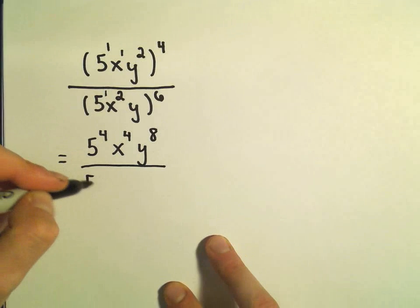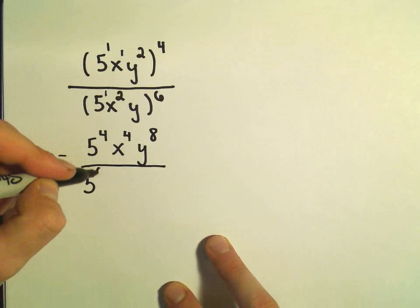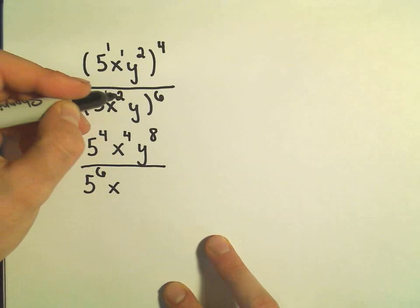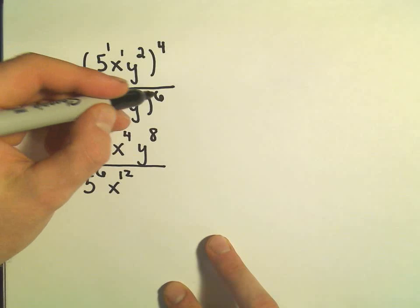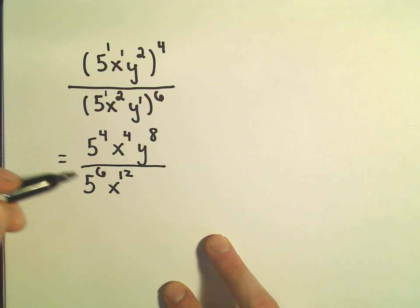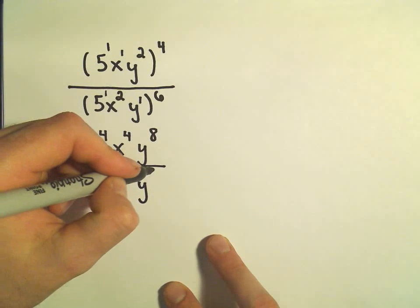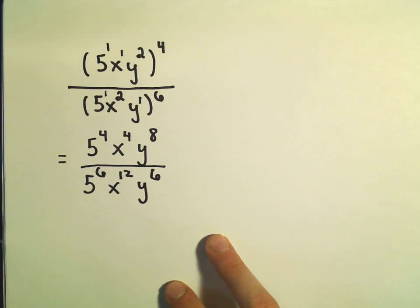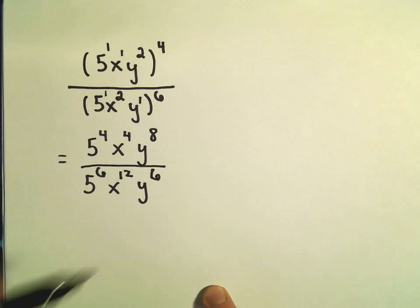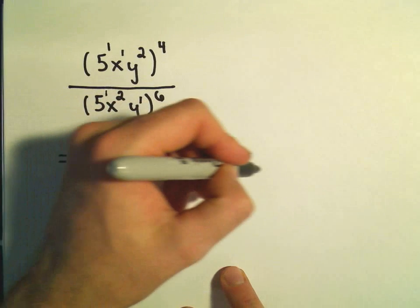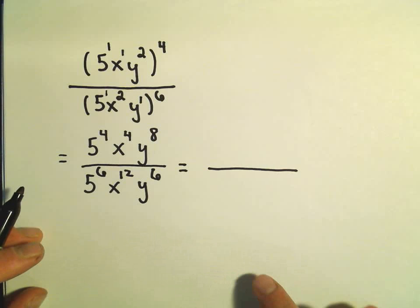On the bottom, 1 times 6 will be 6. We have x. 2 times 6 will be 12. y to the 1st being raised to the 6th power. Again, we multiply. That will give us just y to the 6th power. And now I'm going to do the same trick that I showed you at the end. I'm just going to hopefully put things in the correct place.